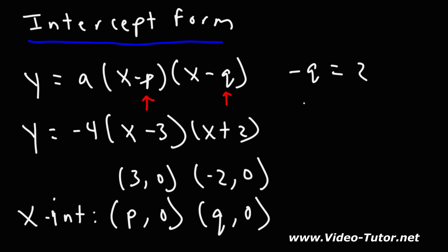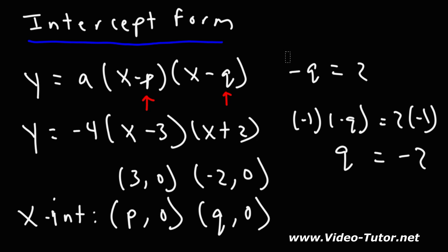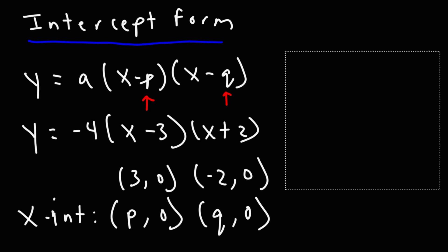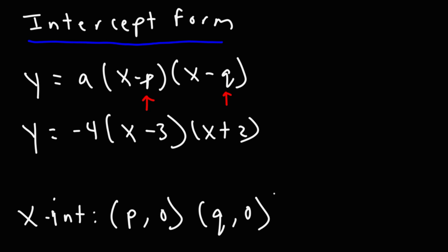You multiply both sides by negative one: positive q equals negative two. So it's very easy to find the x-intercepts if you have the intercept form of the quadratic equation.